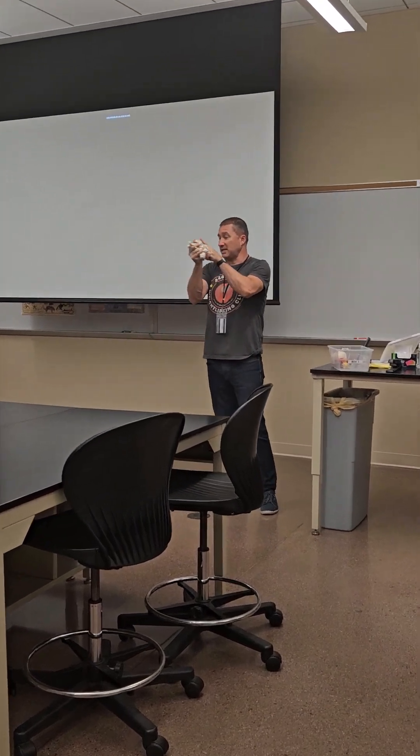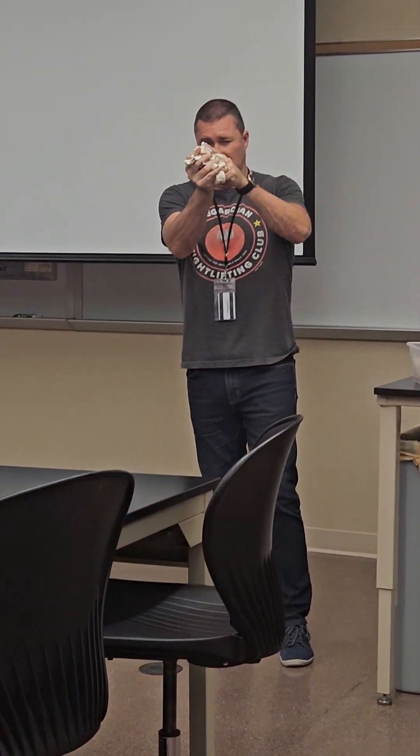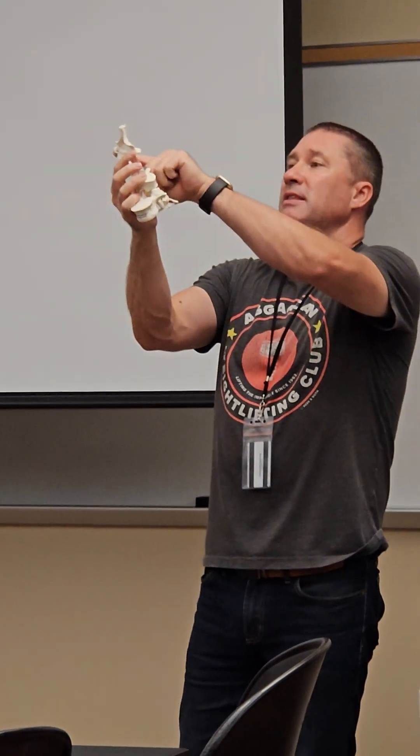The axis has got this dens-like structure. Here's a generic cervical vertebrae. Here's how you can tell you've got a cervical vertebrae: number one, you've got these transverse foramina — transverse means on the side. And then you're going to have a split, or bifid, spinous process, so it's going to be split like this.